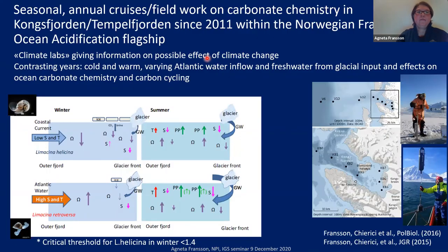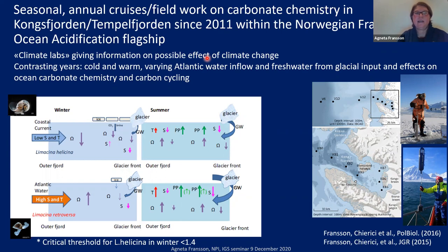We have studied seasonal variability with annual cruises and fieldwork to study carbonate chemistry in Kongsjorden and Tempelfjorden since 2011 within the Norwegian Fram Center ocean acidification flagship. We use the fjords as climate labs because in a small area you can get information on possible effects of climate change. We also have contrasting years with cold and warm conditions, which give varying Atlantic water inflow, varying freshwater and glacier inputs, and varying effects on ocean carbon chemistry. The figure shows two scenarios: cold versus warm Atlantic water entering the fjord, with warmer water causing more glacier melting at the glacier base.